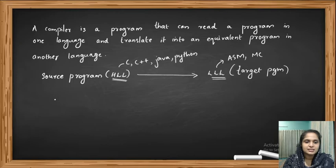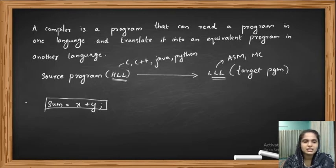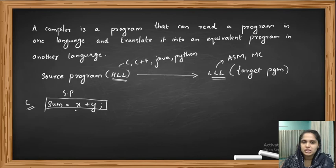For example, let's consider a simple statement: sum = x + y. Let's assume this statement is part of our source program, for example a C program. This is our source program, but the computer cannot understand this language. What the computer understands is the machine code.